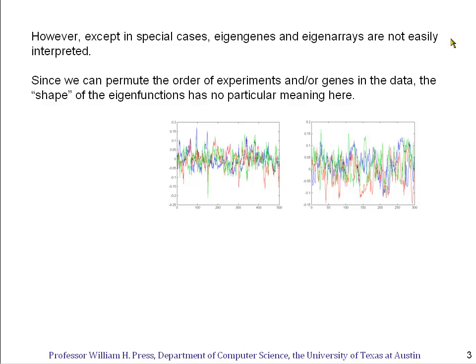Now, except in special cases, the eigengenes and eigenarrays are not easily interpreted, and that's the downside of this kind of analysis. First of all, there's no particular meaning in the shapes of these graphs, because we could permute the order of experiments and or the order of genes in the data, and so the shape would change around.